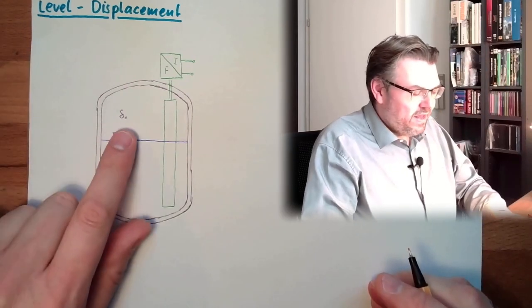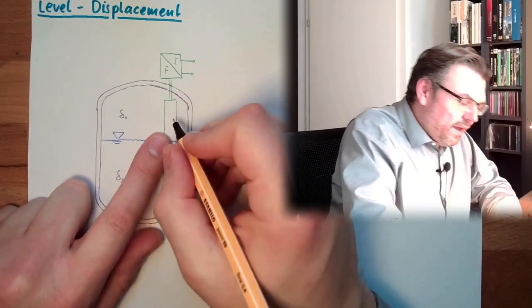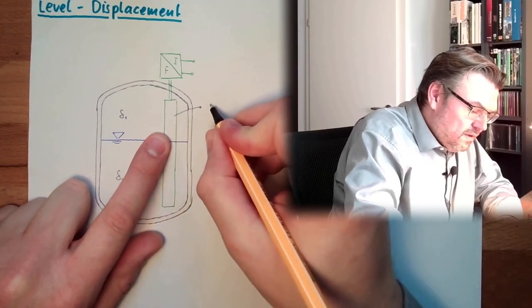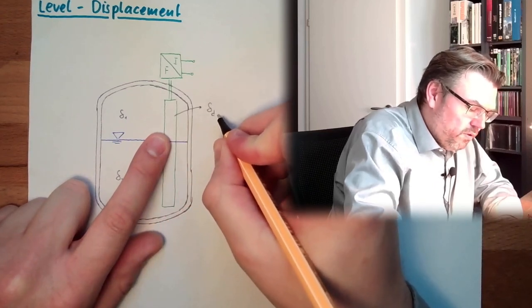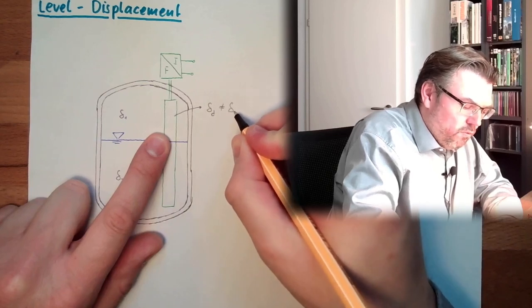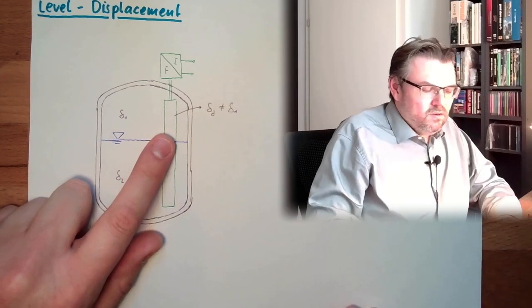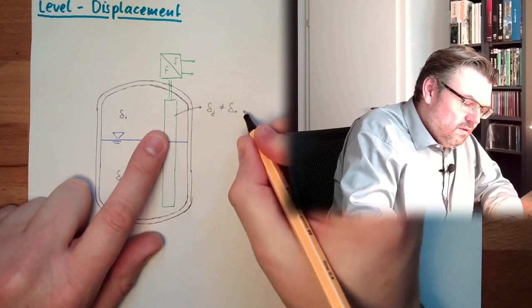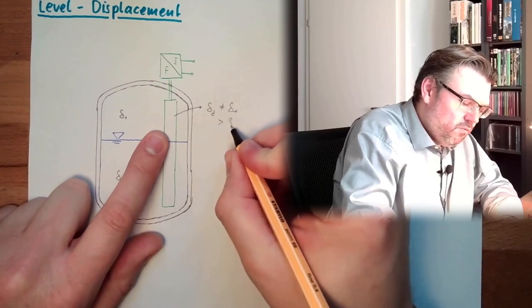And if the density rho1 and the density of this, of the displacement body, this must not be equal to rho1, so usually it's bigger, bigger than rho1.